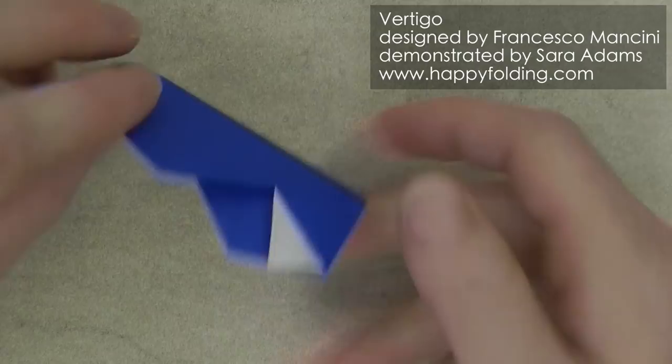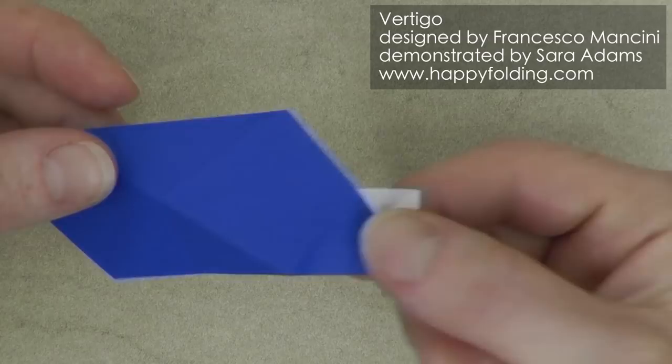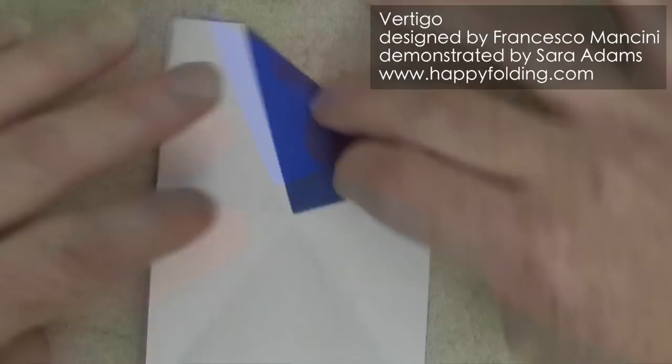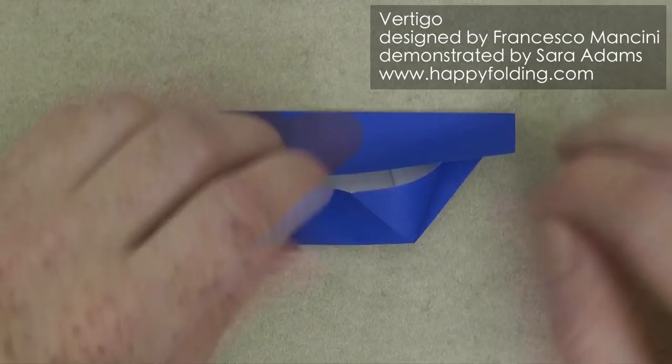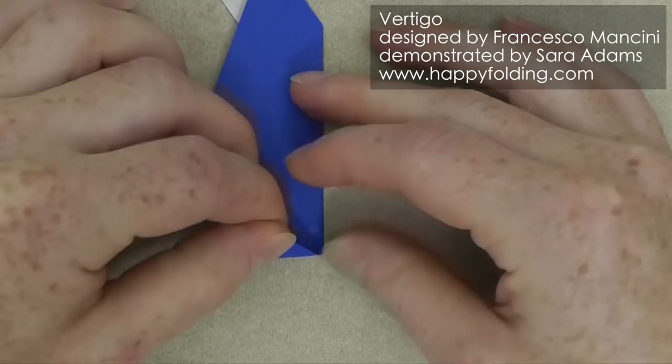And now you have the basic module done, except for one more crease, which we'll add later on. And you need to fold 12 in total. So let me just very quickly go through this again. And that's the next module done.